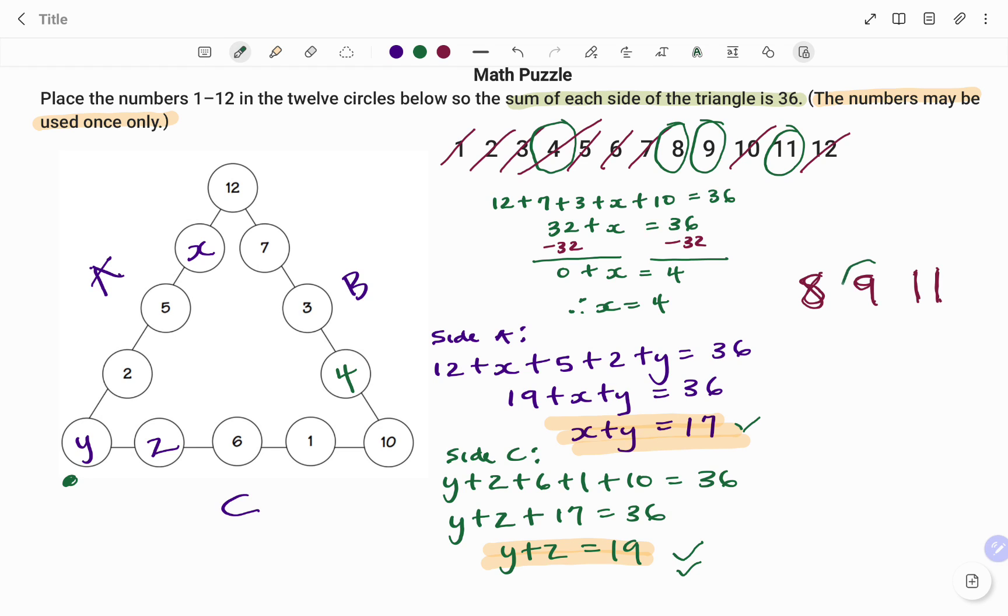The next step is to check if my y is 9. So what that means is 9 plus 8 will give me 17. However, 9 plus 11 will give me 20. In my expression, the two equations that I have, x plus y and y plus z, I need a combination that would give me 17 and 19. So therefore my y, or the common number, cannot be 9.